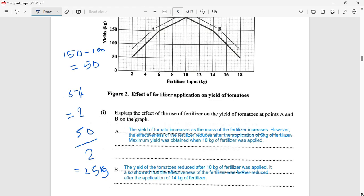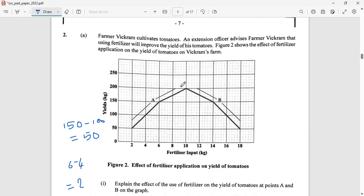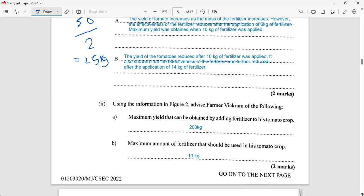At point B, the yield of tomatoes reduced after 10 kilograms of fertilizer was applied. It also showed that the effectiveness of the fertilizer was further reduced after the application of 14 kilograms. Using information in Figure 2, advise Farmer Vikram on the maximum yield that can be obtained by adding fertilizer to the tomatoes. Going up to the maximum yield on the graph, then looking at the point where the line intercepts the y-axis, that's going to be 200 kilograms of tomato.